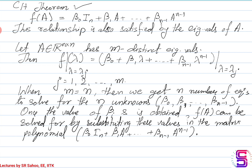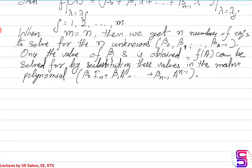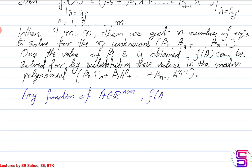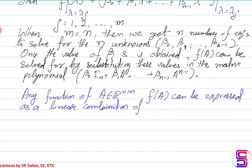I_n is nothing but A^0, A is nothing but A^1, and so on. So I will state this: any function of A in R^n — that is, F(A) — can be expressed as a linear combination of A^0, A^1, ..., A^{m-1}.